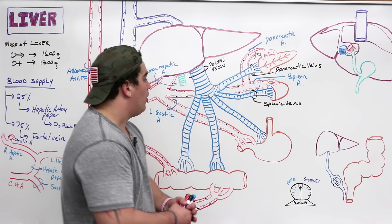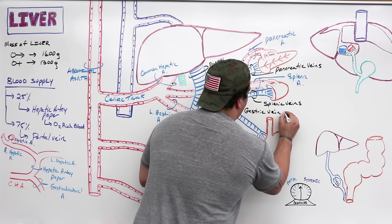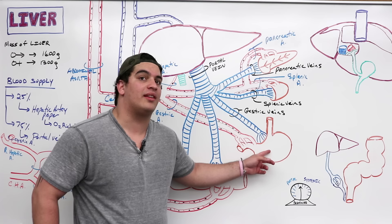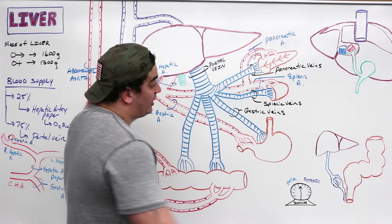The gastric veins drain the stomach. While there isn't much absorption in the stomach, lipid-soluble substances such as aspirin and alcohol can be absorbed there and carried through the gastric veins into the portal vein.